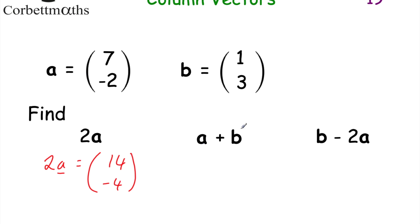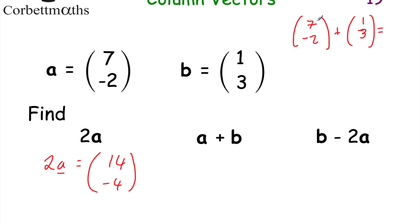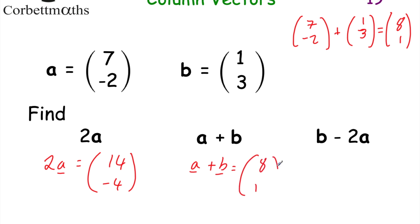Next, a plus b. If we wanted to find a plus b, we take a which is (7, -2) and b which is (1, 3), and we just add them together. 7 plus 1 is equal to 8, and negative 2 plus 3 is equal to 1. So the vector a plus b would be equal to (8, 1).